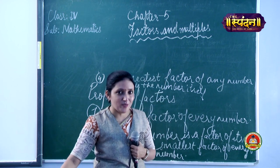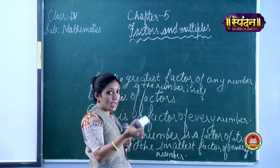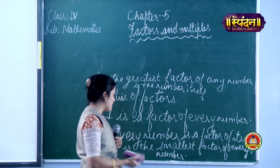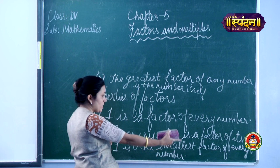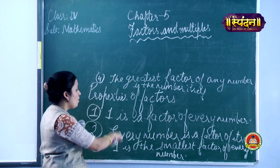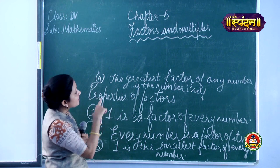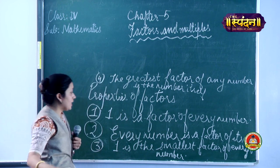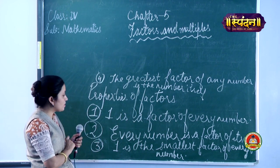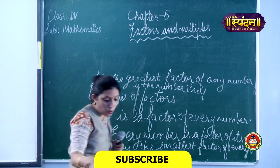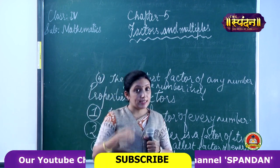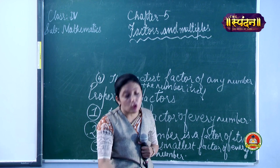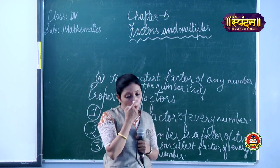So this much was clear as a recall. One is a factor of every number; every number is a factor of itself; one is the smallest factor; and the greatest factor of any number is the number itself. All these properties are also given in your book on page number 134.